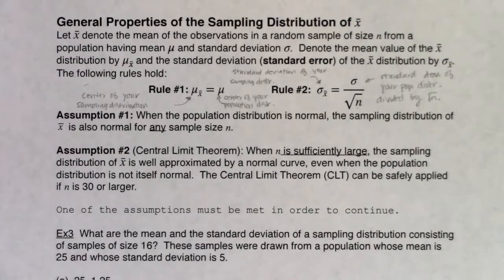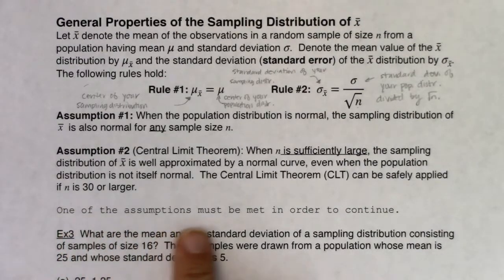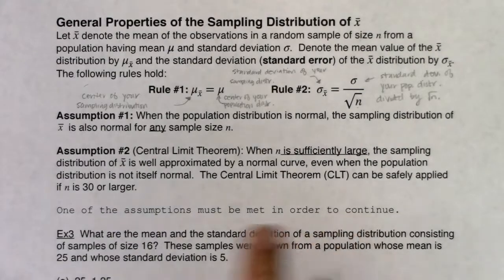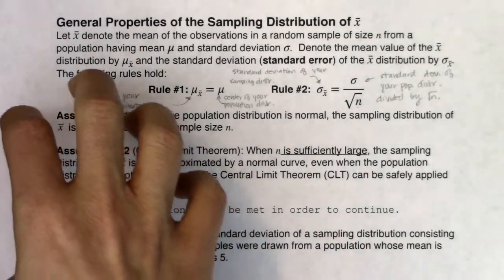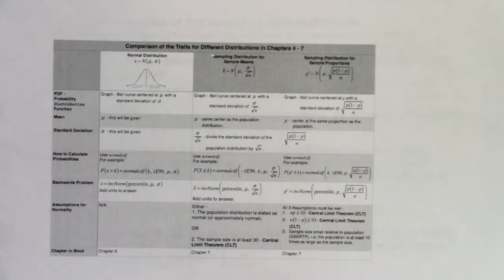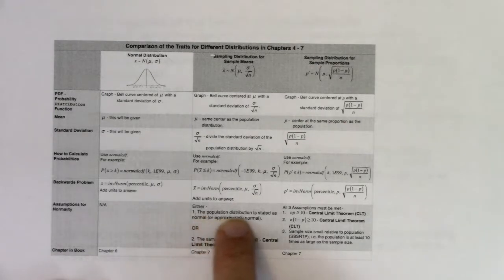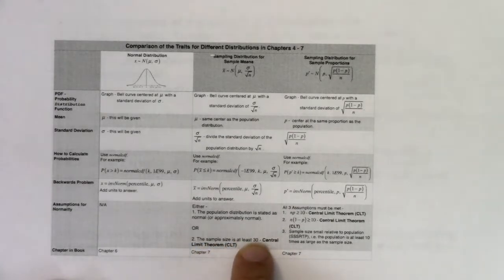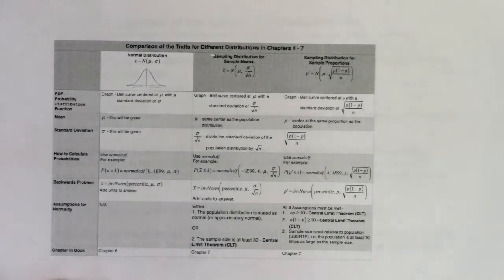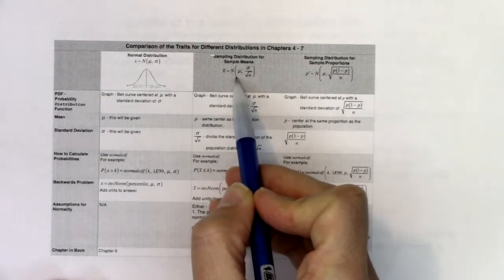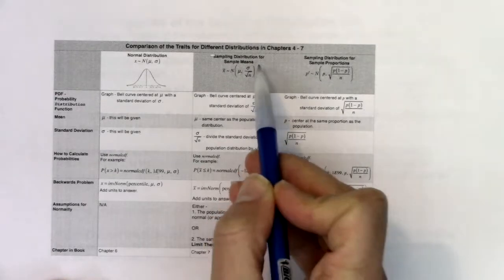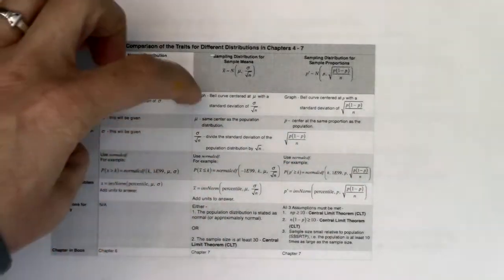There are two ways to get normality in mean land, and only one of the assumptions needs to be met in order to continue. This will change when we get to proportion land, so start separating mean land versus proportion land. When in mean land, to assess normality: either the population distribution is stated as normal or approximately normal, or the sample size is at least 30 and the CLT kicks in.